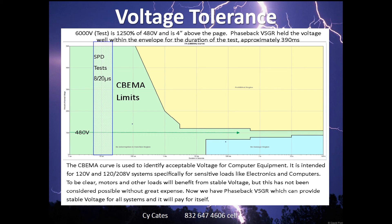You can see the window of time that would be the effective range of MOV-based devices, TVSS and SPDs. They are designed for 8 to 20 microseconds. If a high-voltage condition lasted much longer than that, the MOVs would fail, and sometimes they're going to fail catastrophically. Phase-back VSGR handled 6,000 volts for 390 milliseconds and stayed well within this acceptable voltage envelope.